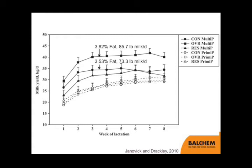On this graph showing milk yield during the first eight weeks of lactation, with heifers there's basically no treatment effect. For multiparous cows, those that were overfed produced milk with 3.82% fat and 86 pounds of milk, while animals fed the high straw diet produced 3.53% fat and 73.3 pounds of milk — with a p-value of about 0.10. So you start to scratch your head: looked pretty good metabolically, but maybe not quite the milk yield in those multiparous cows.